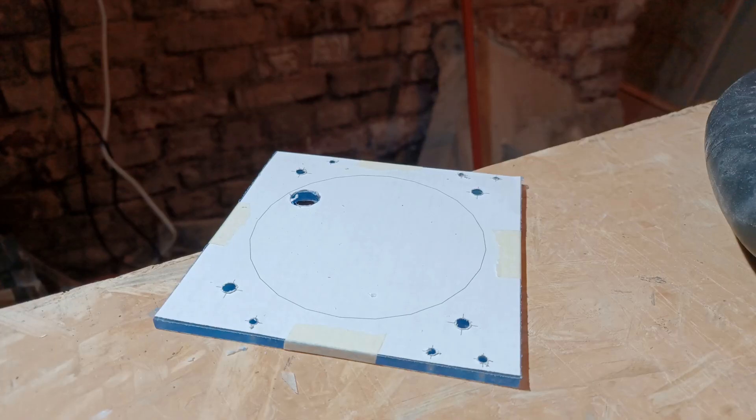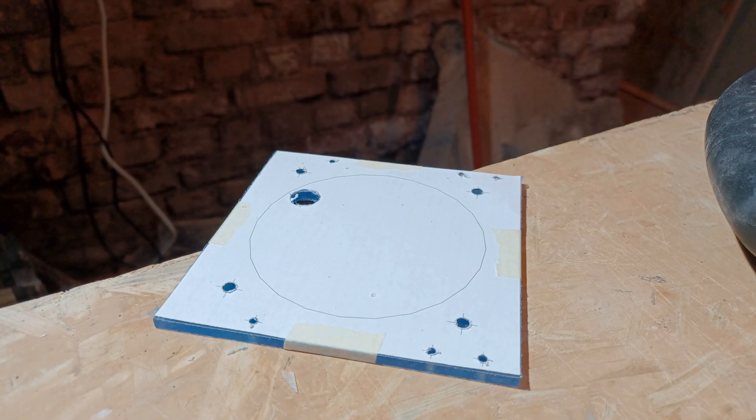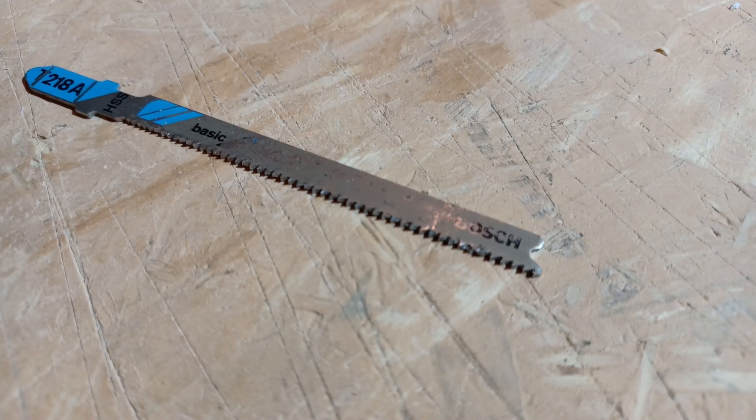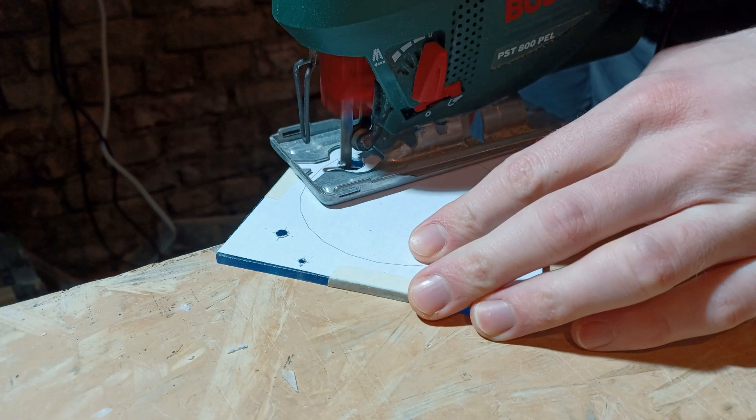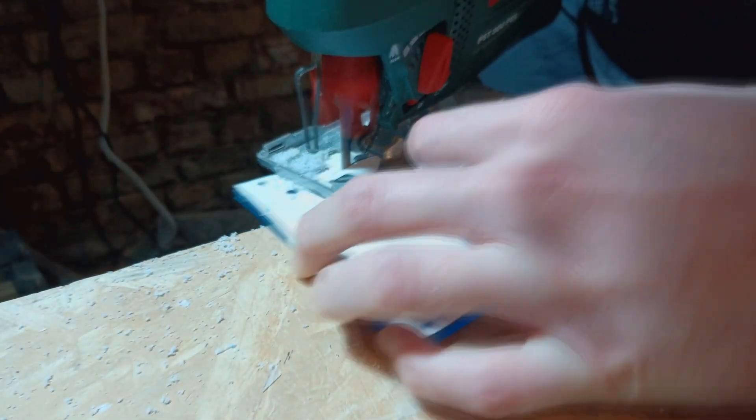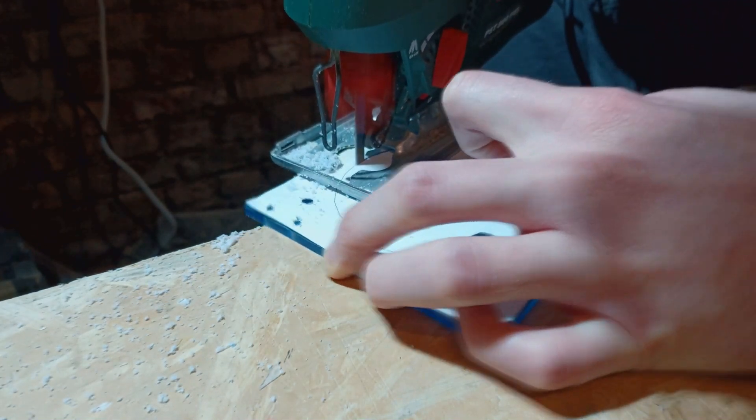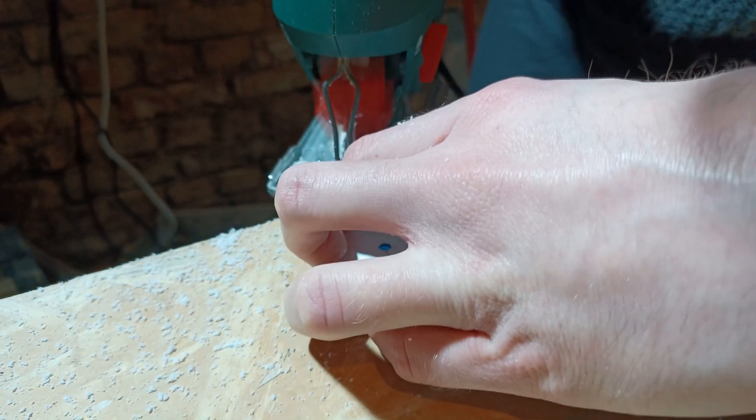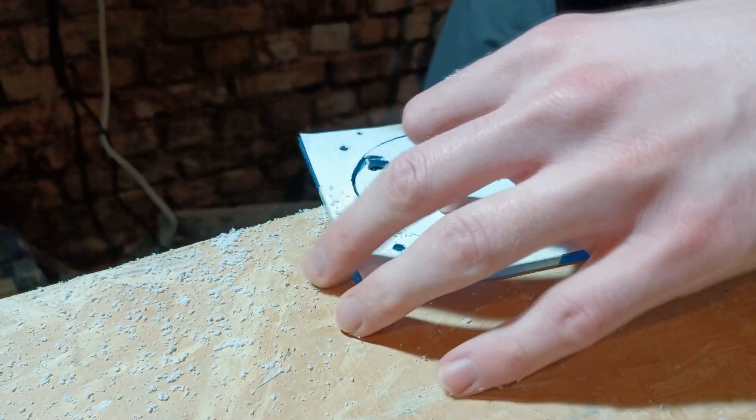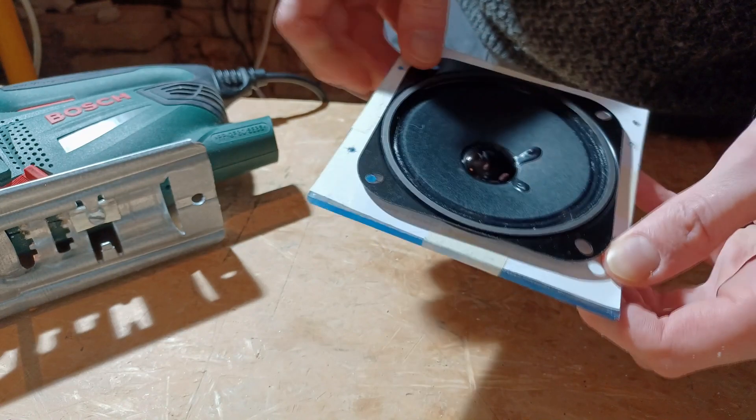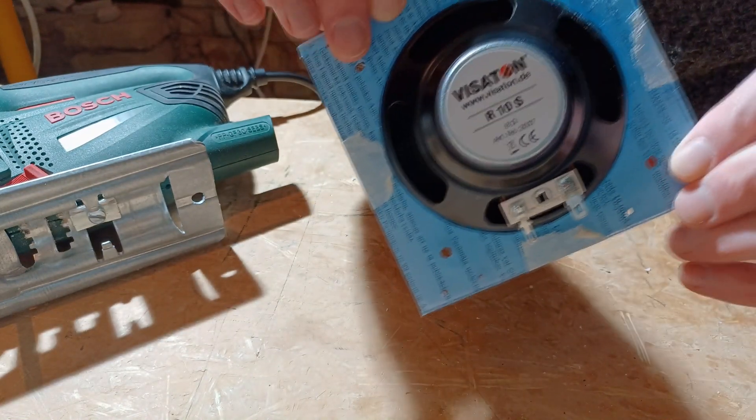This is the hole I need to saw with a jigsaw to fit the speaker. There are special blades for acrylic glass out there, but I haven't found them to be particularly useful for sawing curves, so I'm just going to use a metal blade here. I didn't expect the speaker to fit on the first try, and it didn't.